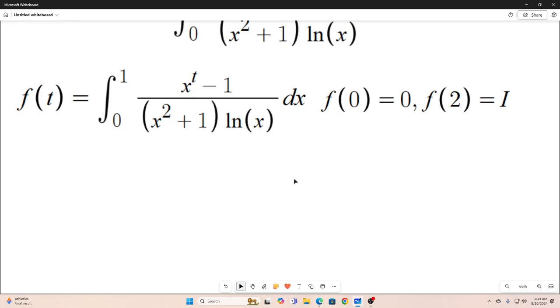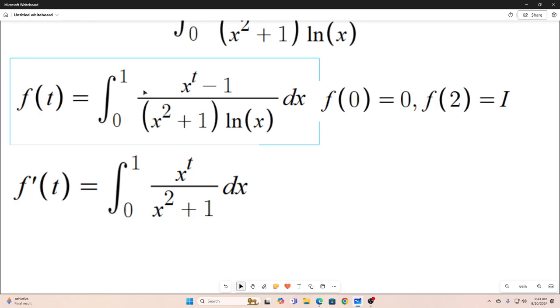All right. Next, we take the derivative with respect to t using the Leibniz rule for differentiation under the integral sign by just taking the partial with respect to t of the integrand there and leaving the rest alone. And this is what you end up with.